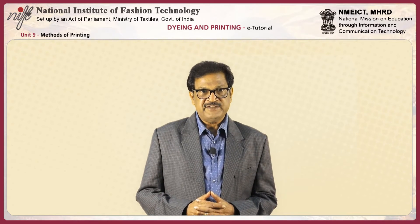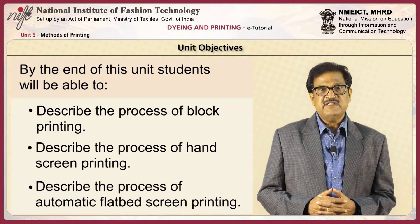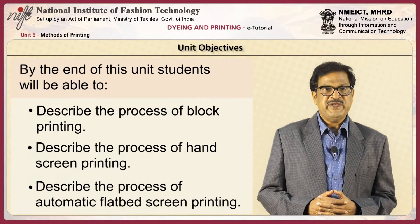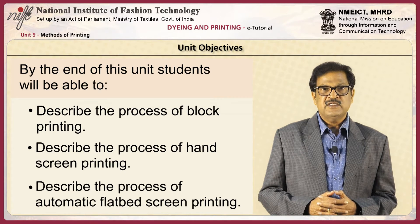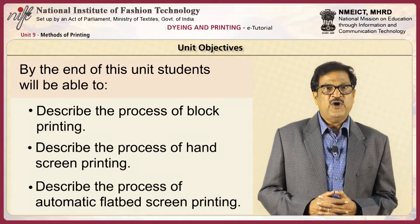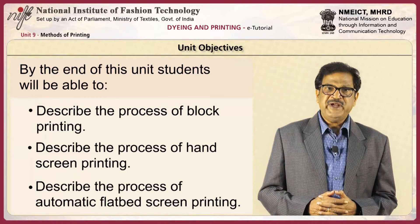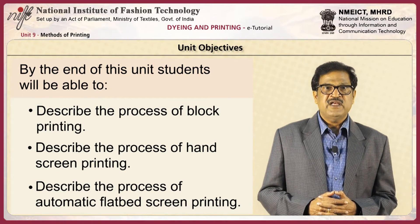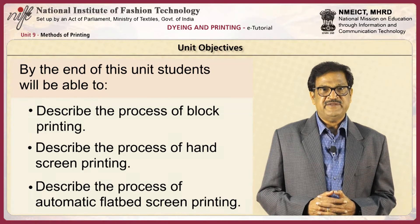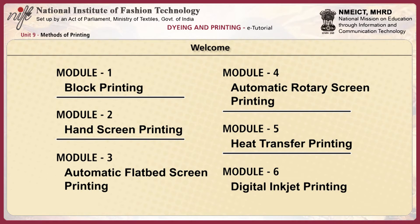Methods of printing. By the end of this unit, students will be able to describe the process of block printing, hand screen printing, automatic flatbed screen printing, automatic rotary screen printing, and heat transfer printing. This unit focuses on the different techniques of printing and comprises six modules.